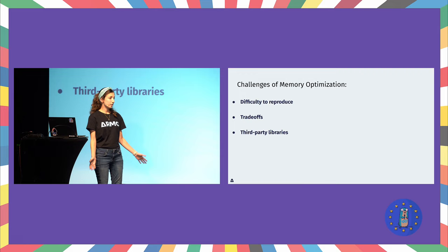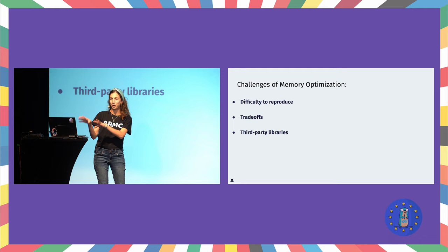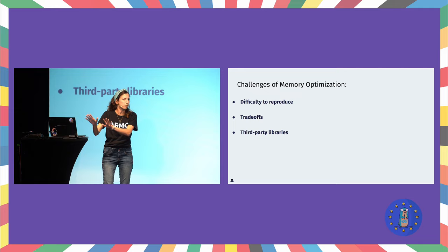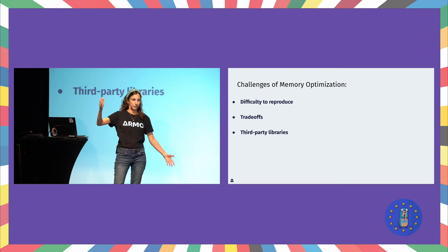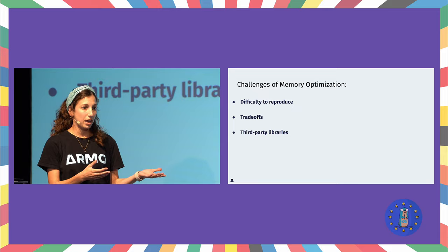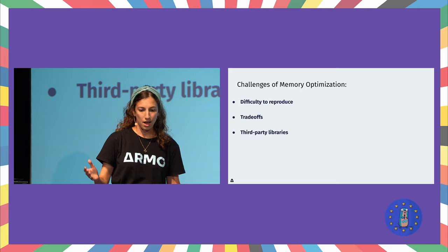So what are the challenges we face when trying to do this? First of all, it's difficult to reproduce. We're not going to get any memory errors doing the happy flow. If I run my application on my computer, on my computer it works — you know that saying. We're going to get those errors on large environments — in our case, very large Kubernetes clusters with a lot of resources — on edge cases we didn't imagine, that we may not catch in our unit tests, system tests, or smoke tests. It will happen unexpectedly.